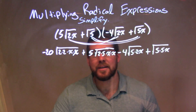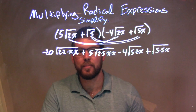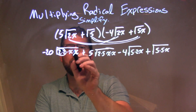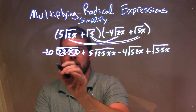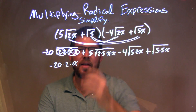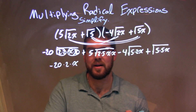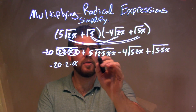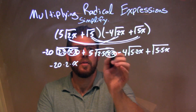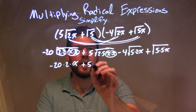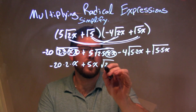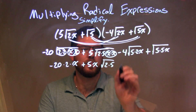Now let's simplify each one of these. We see a pair of 2's and a pair of x's, so they come to the outside, giving us minus 20 times 2 times x, with nothing left in the square root. For the next term, we only have a pair of x's, so those come to the outside giving us 5x, with the square root of 2 times 5 remaining inside.